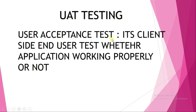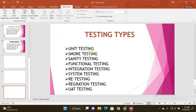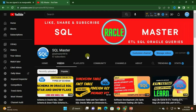Next is UAT testing — User Acceptance Testing. This is a client-side and user test to check whether the application is working properly. If the client encounters errors, they report it back to the project team, the testers fix the issues, and then the software package is finally released to the client. This is called UAT testing.